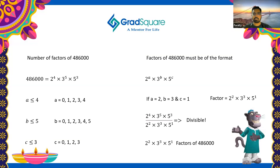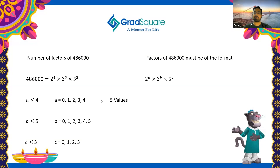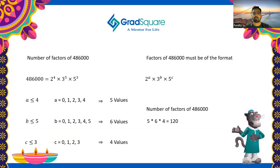To count all factors, we take any combination of a, b, and c from their valid value sets. There are 5 possible values for a (0 through 4), 6 possible values for b (0 through 5), and 4 possible values for c (0 through 3). So the total number of factors of 486,000 is 5 × 6 × 4 = 120 factors.